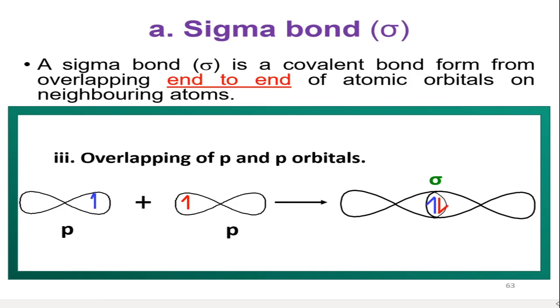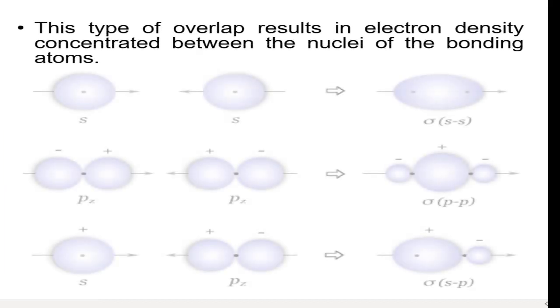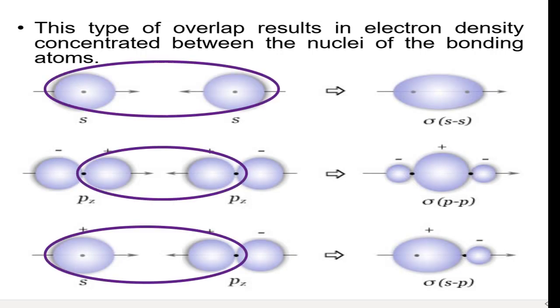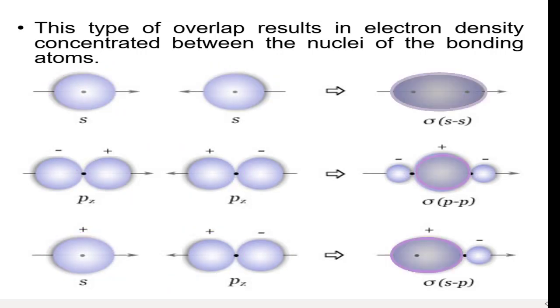This type of overlap results in electron density which is concentrated between the nuclei of the bonding atoms.